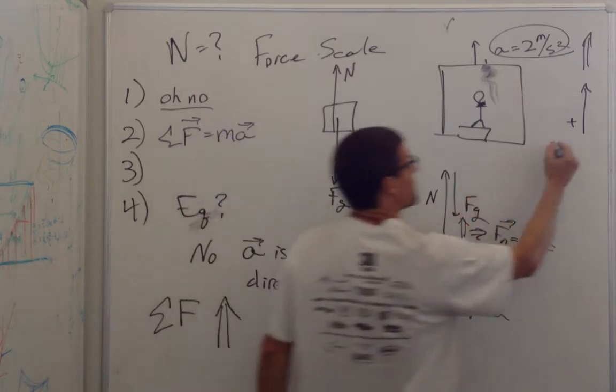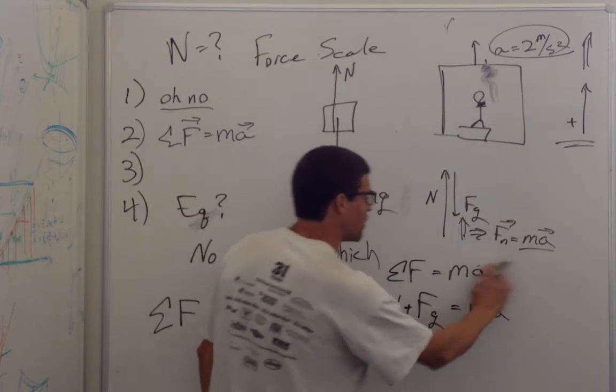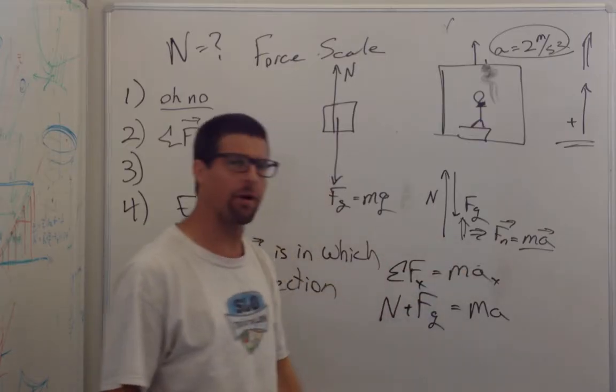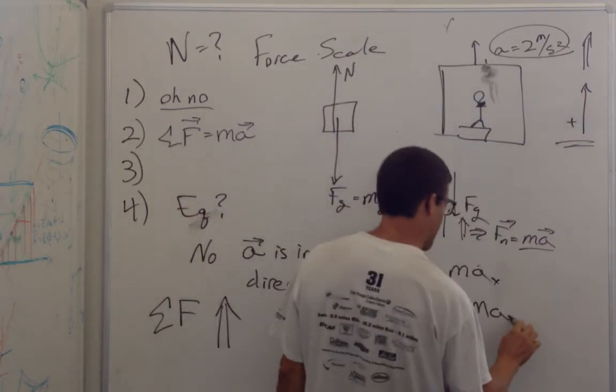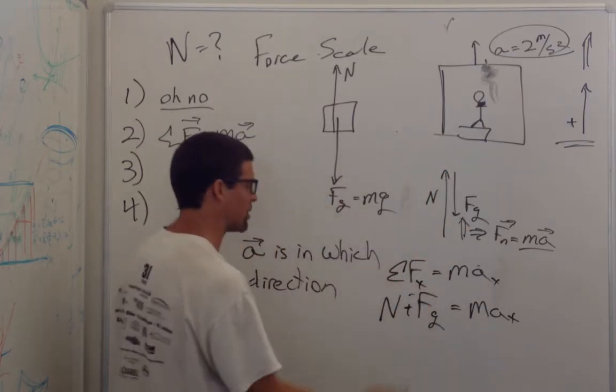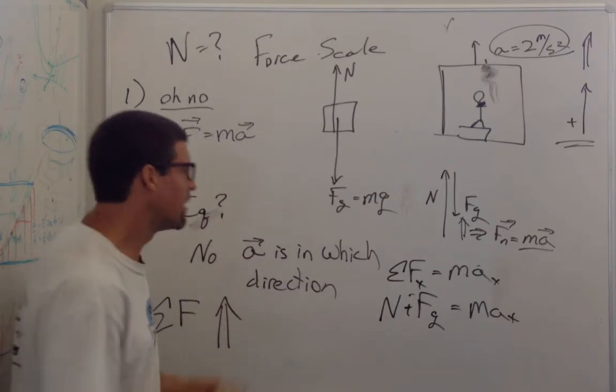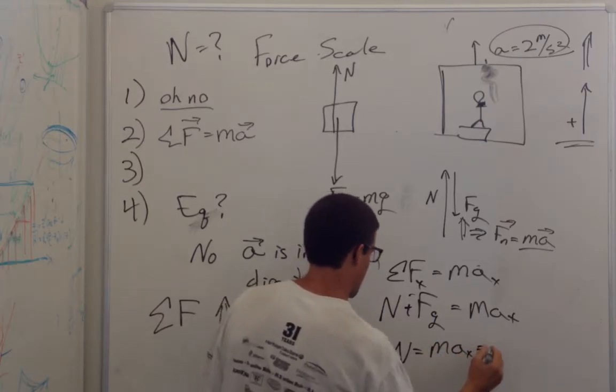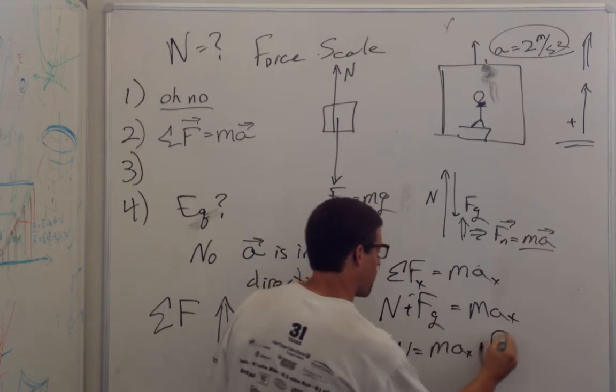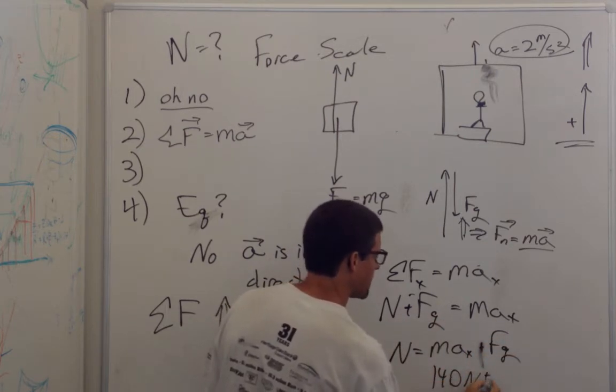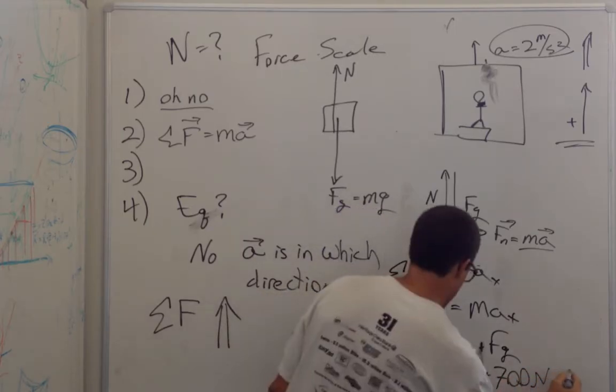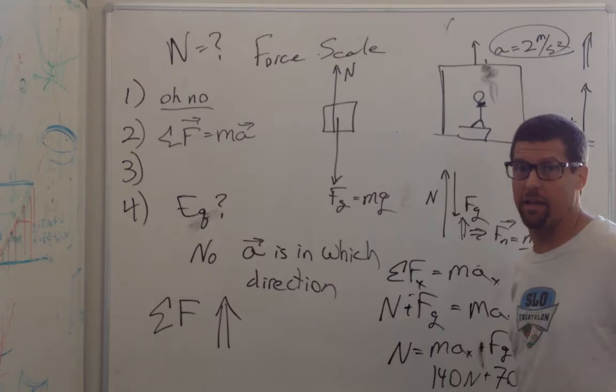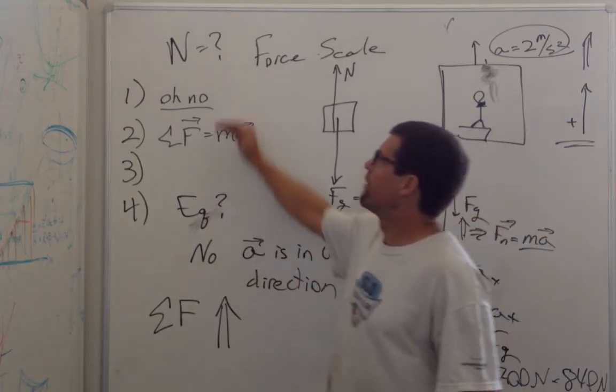And then we go through and make sure the signs are right. So we say this is the positive direction. The sum of the forces in the x direction are mass times acceleration in the x direction. And the acceleration is in the positive x direction, the force of gravity is in the negative x direction, and the normal force is in the positive x direction. And so now I can write the normal force is equal to mass times the acceleration plus the force of gravity. And I have my 140 newtons plus my 700 newtons gives me 840 newtons.